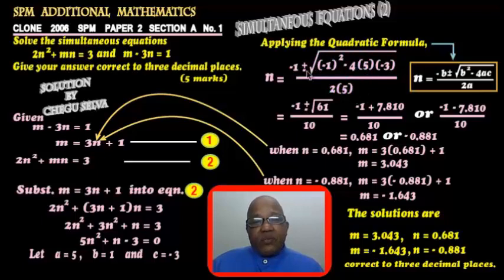When simplified, you get negative 1 plus minus square root 61 over 10. And what is the square root of 61? 7.810 from your calculator.